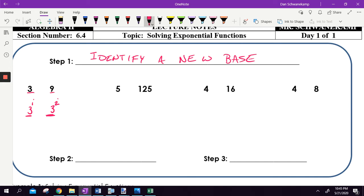Okay, so we need to identify a new base. So let's try that again, 5 and 125. Is there any number that I could rewrite both the number 5 and 125 to be such that you could write them both as a number to a power? Well, 5 to the first and 5 cubed. You might not be perfect at that, but 5 times 5 is 25 times 5 again is 125. There's three of them, 5 cubed. So we rewrote that one as 5 to a power.